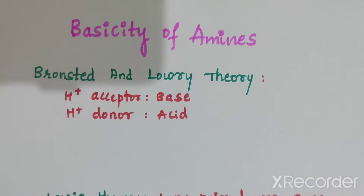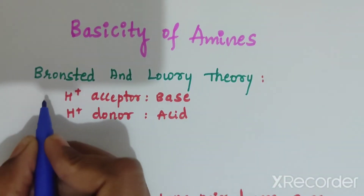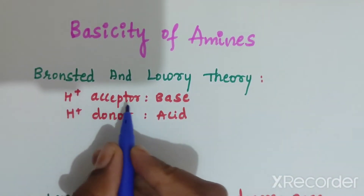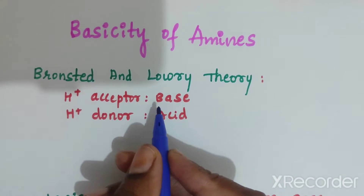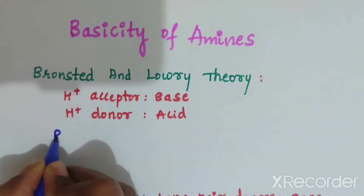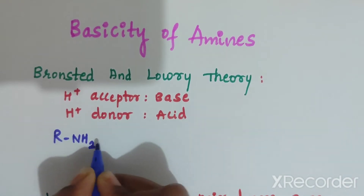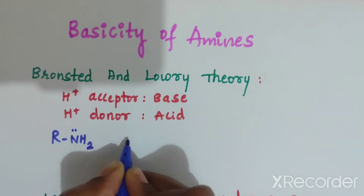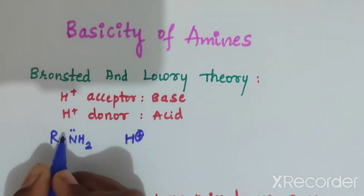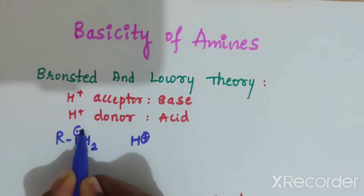In continuation with the amines topic, we will look at basicity of amines. According to Bronsted and Lowry theory, H+ acceptor is a base and H+ donor is an acid. R-NH2, which has a lone pair of electrons, can abstract a proton.